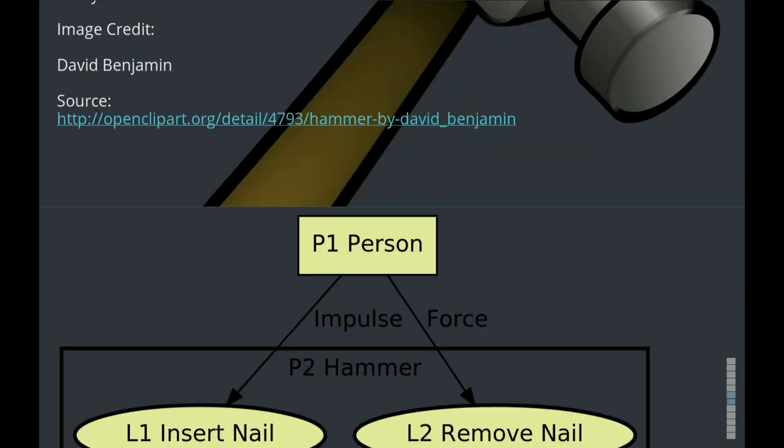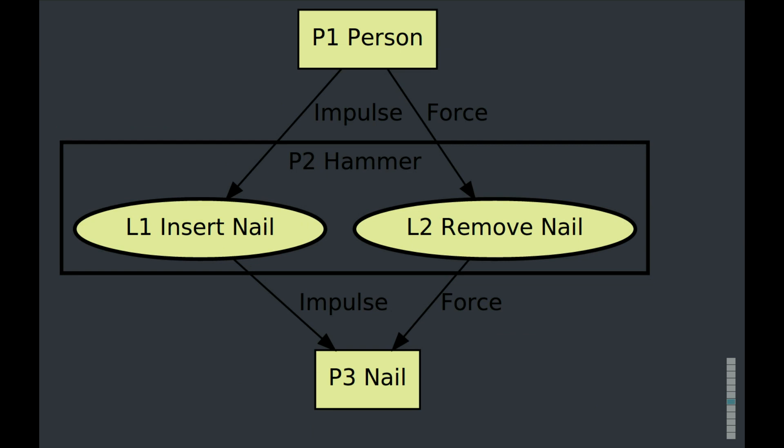Here is a simplified logical context view. Can you see what it's made of? Person, hammer, nail. So those are the physical things. Those physical things are the blocks that we'll put our functions into. And can you see the functions of the hammer? Insert nail, remove nail.